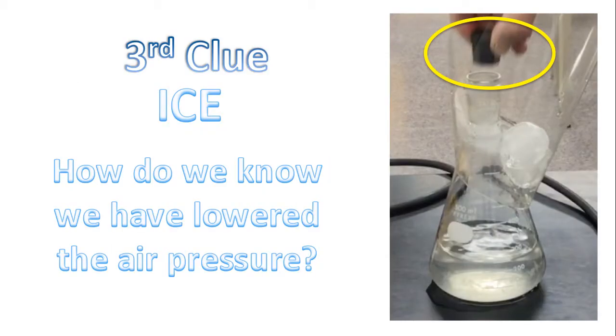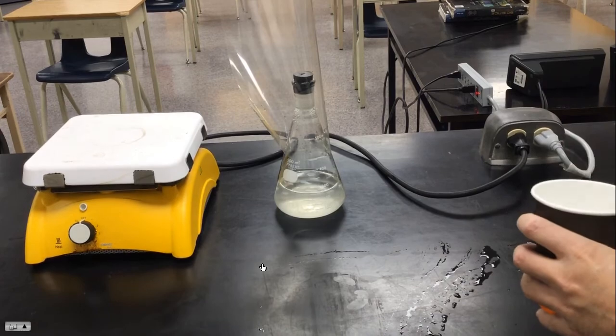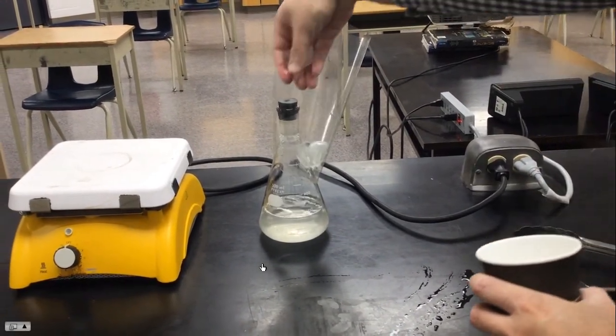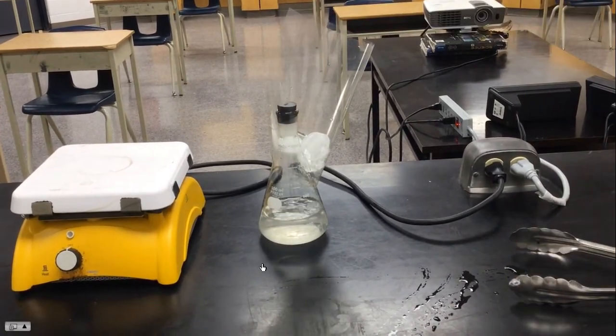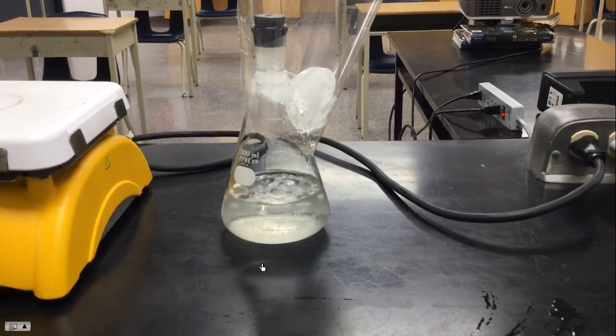So how do we know we've lowered the air pressure? Let's watch this demonstration and see. We add the ice, water starts to boil, we've reduced the air pressure inside the flask. You can clearly see the water boiling.